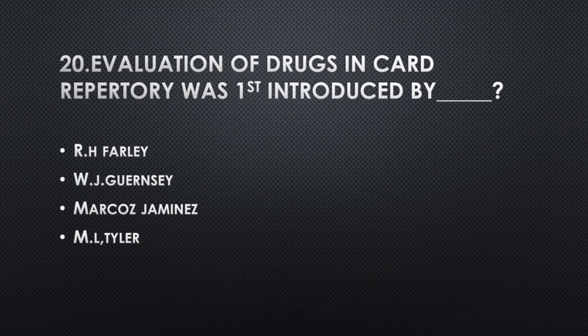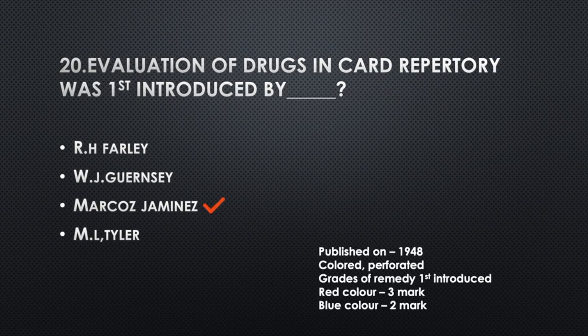Evaluation of card repertory was first introduced by — Option A: R.H. Fairley, Option B: W.J. Guernsey, Option C: Markus Geminius, Option D: M.L. Tyler. Answer: Option C, Markus Geminius. This card repertory was published in 1948. It is a colored and perforated card repertory. Grades of remedy were first introduced in this card repertory. Red color indicates 3rd grade.